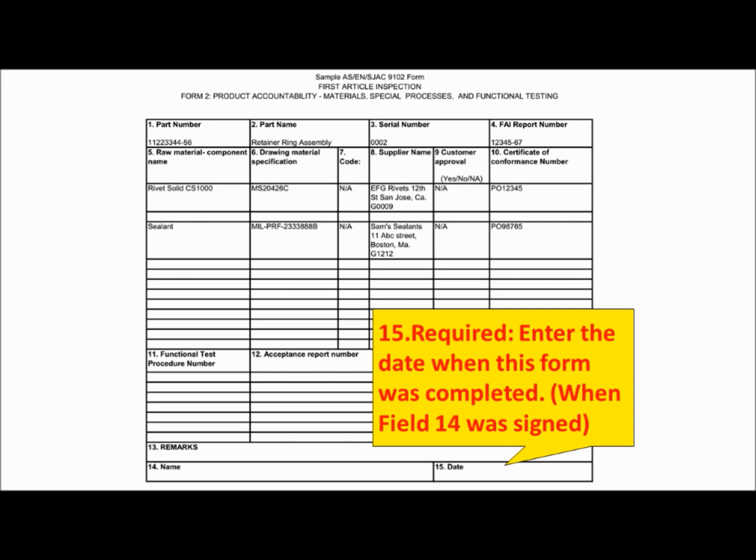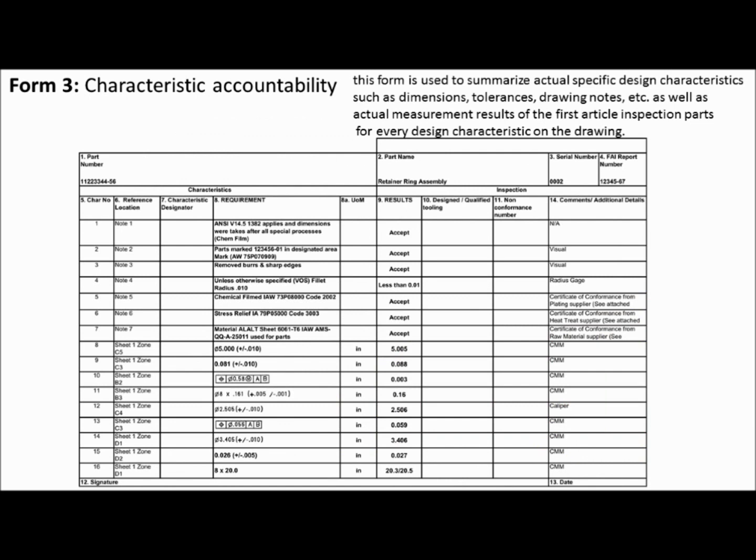Form 3, Characteristic Accountability, is used to summarize actual specific design characteristics such as dimensions, tolerances, drawing notes, etc., as well as actual measurement results of the first article inspection parts for every design characteristic on the drawing.